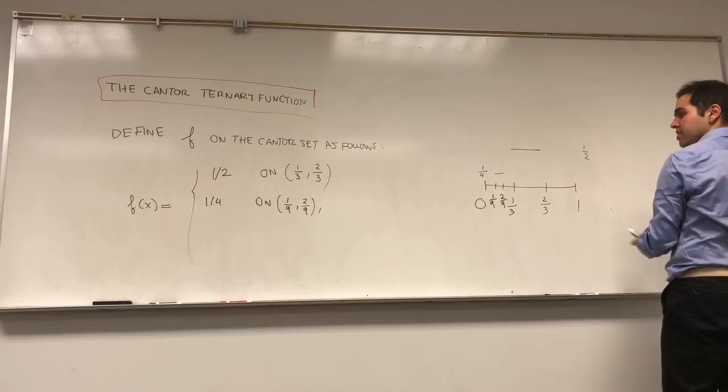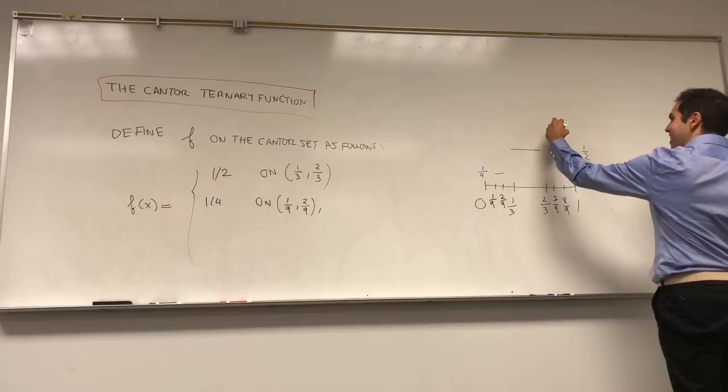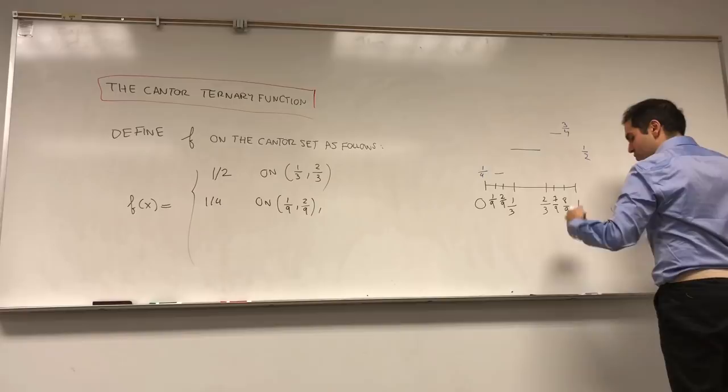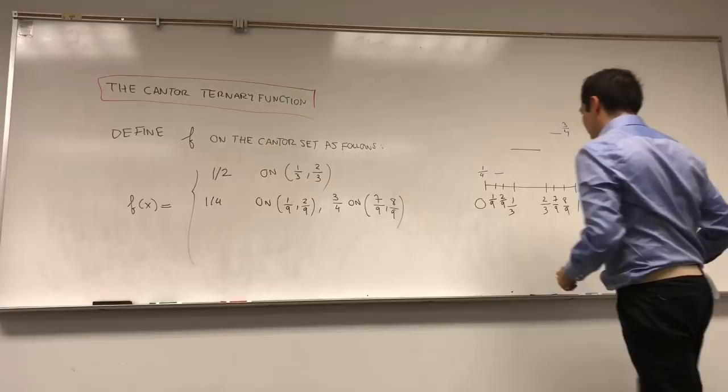This interval is already taken, but on the interval [2/3, 1], you can use the same approach. We get [7/9, 8/9] as the middle piece, and because we want the function to be non-decreasing, define it to be 3/4. So 3/4 on [7/9, 8/9].